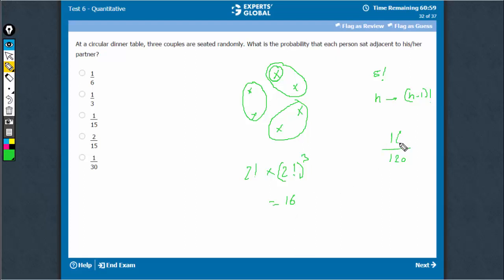16 upon 120, the required probability is... divide both sides by 8, so you get 2 upon 15. That's the right answer.